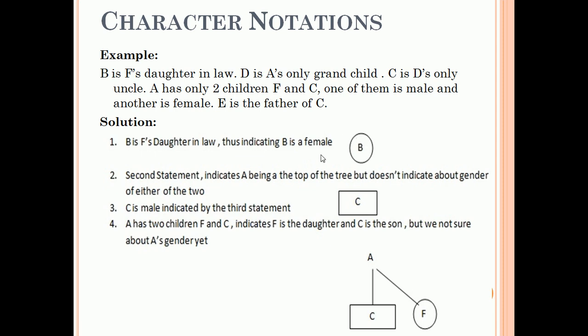Now we will take a circle to denote female and a rectangle to denote male. The second statement indicates A being at the top of the tree but doesn't indicate about gender of either of the two.